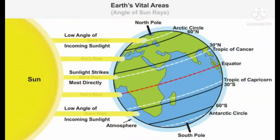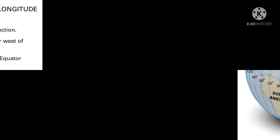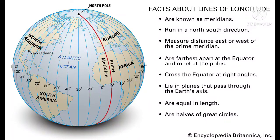Now let us learn about longitudes. A longitude is a line drawn by joining the north pole and south pole. These lines running in the north-south direction are called longitudes or meridians. Longitudes also help us to calculate the local time of a place.